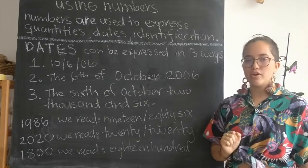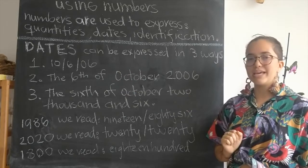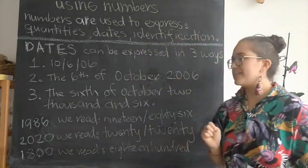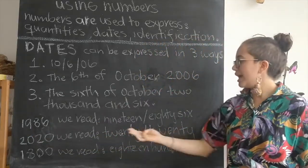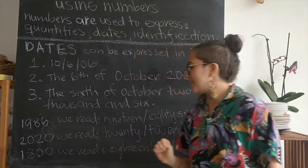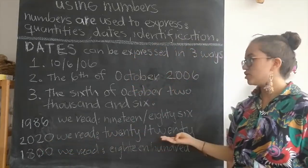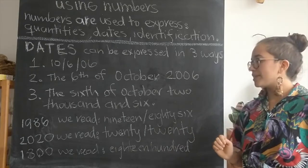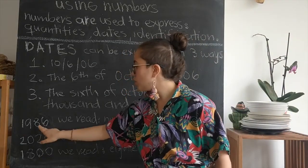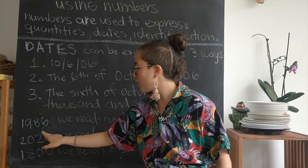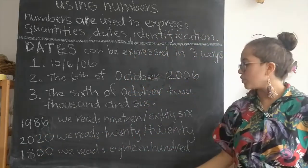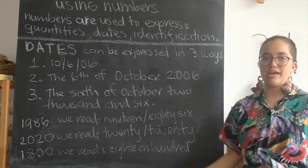To say the year we can say it in two different ways. For example, 1986 we read 1986. And then this year we read 2020. But if we have a number where the last two positions are zeros, we would read 1800 as eighteen hundred.